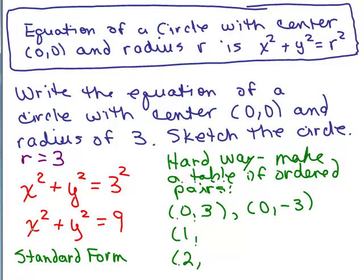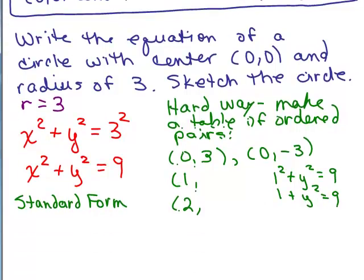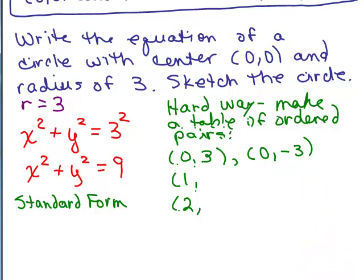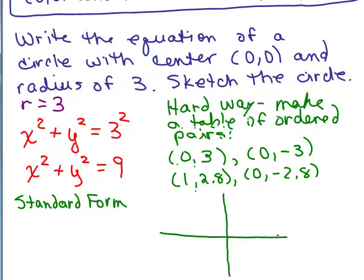Then you could put in 1 for x. We'd have 1 squared plus y squared equals 9, so 1 plus y squared equals 9, meaning y squared equals 8. That's not as easy to do, but you can still take the square root — and again it's still going to be plus or minus, so you get 2 for 1. You can use a calculator to approximate that: it's about plus or minus 2.8. So when x is 1, y is approximately 2.8 or negative 2.8. You could make a bunch of ordered pairs, but this is the hard way — it takes a lot of time.